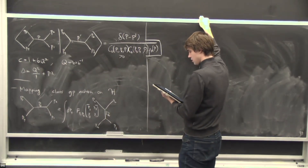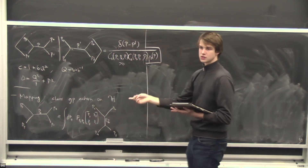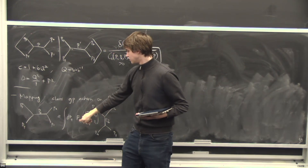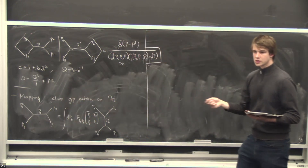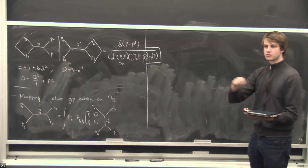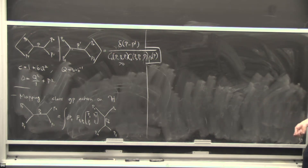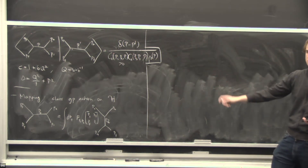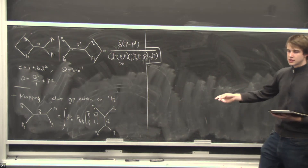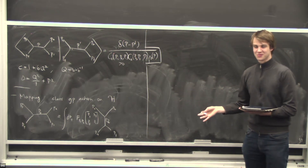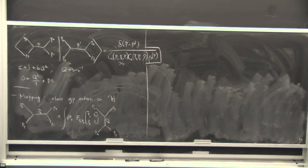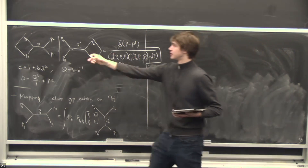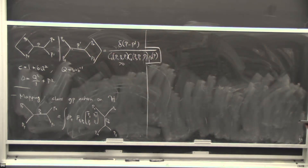With the crossing kernel F, the braiding move, and the modular transformation of the one-point block on the torus, one in principle knows how any conformal block transforms under any crossing transformation. This was formalized by Moore and Seiberg, who gave consistency conditions these F-matrices must satisfy. These have not been completely proven, but are assumed to hold. In particular, the Hilbert space carries a unitary representation of the mapping class group, unitary with respect to the Zamolodchikov inner product.